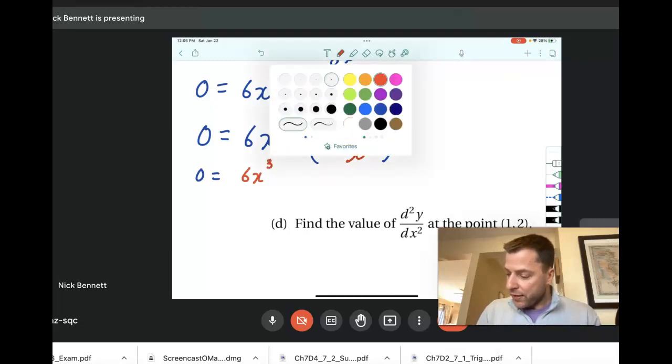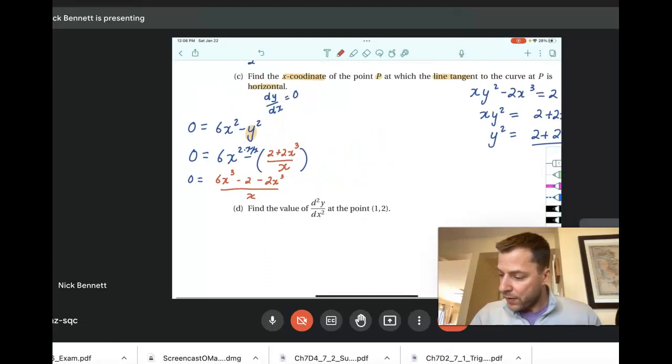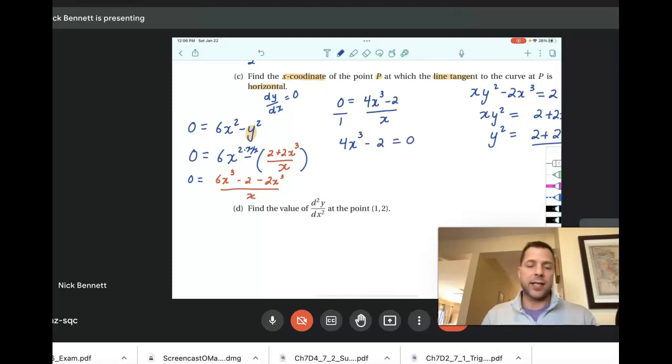And we're going to change everything. So minus 2, minus 2x³, all divided by x. I've made a common denominator. And I could go ahead and simplify the numerator there. I've got some like terms, so I have 0 equals 4x³ minus 2 over x. And now we're going to go ahead and cross multiply here. It's a proportion, and we get 4x³ minus 2, and that's equal to 0, right, x times 0.